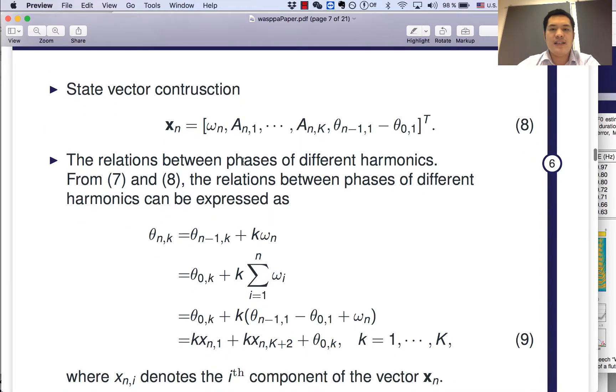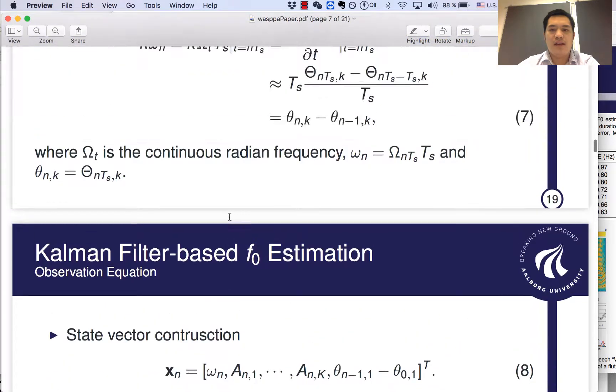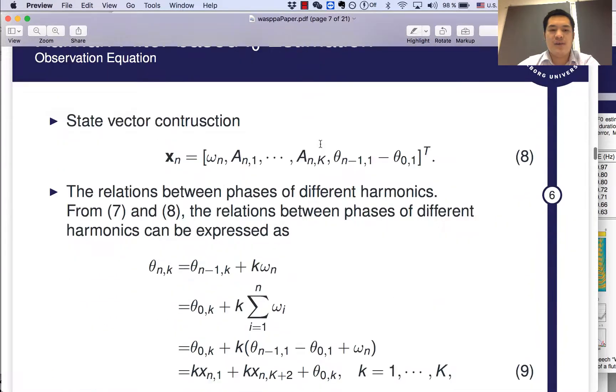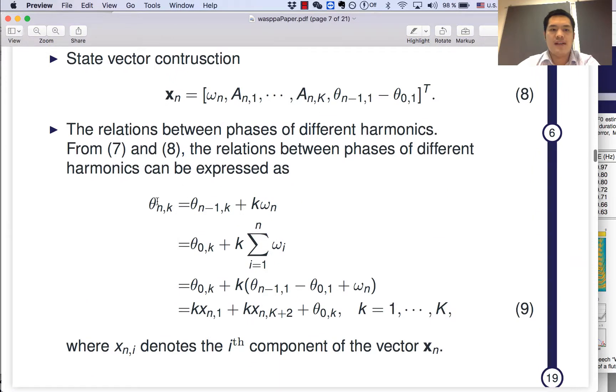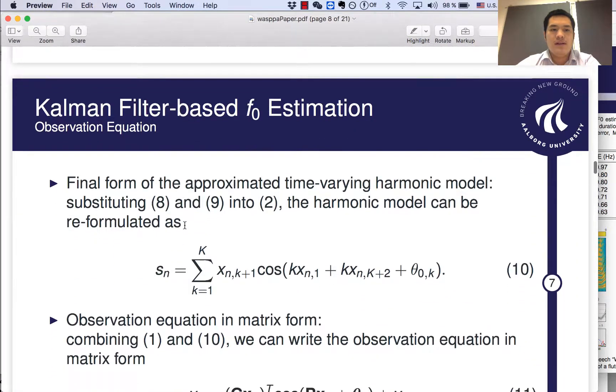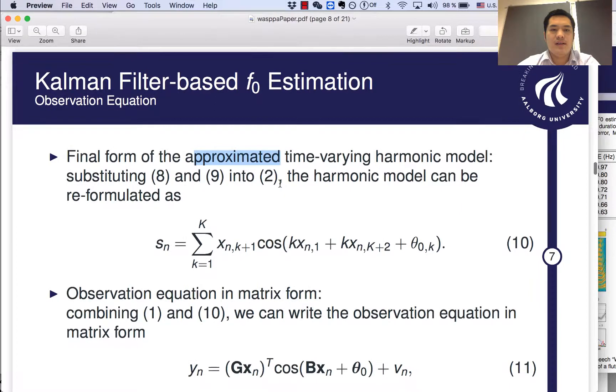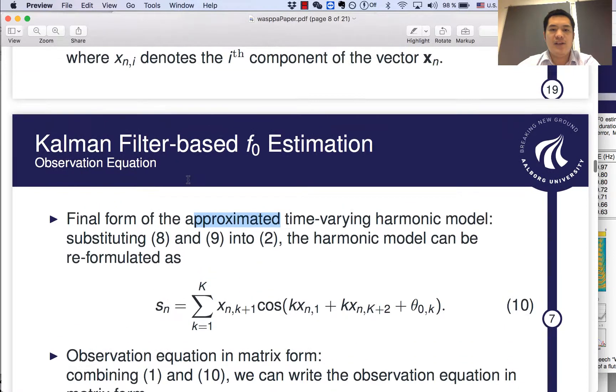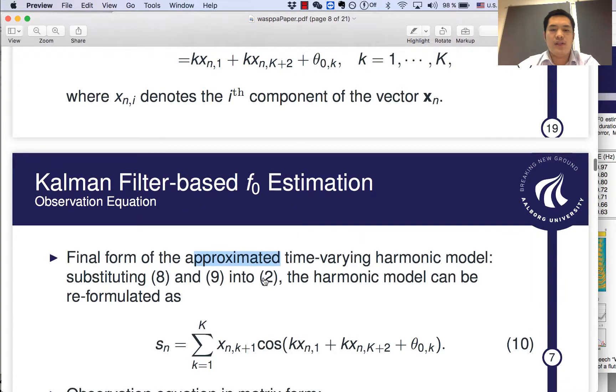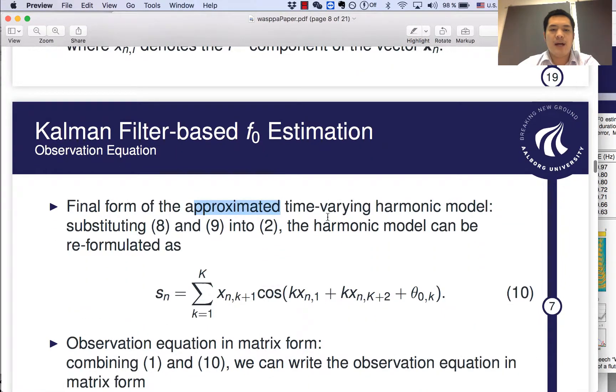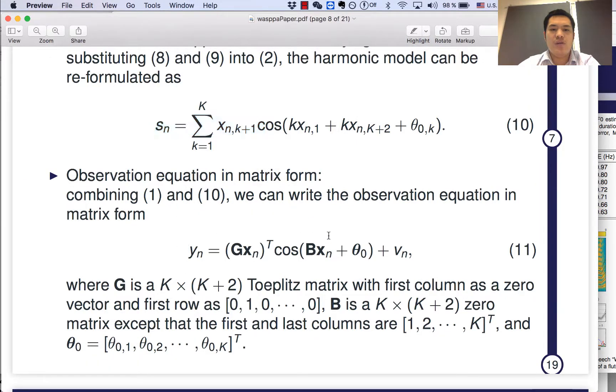Then the relation between the phase of different harmonics from equation seven and equation eight. We can express the relation between the phase of different harmonics as this one. Then the final form of approximate time-variant harmonic model, if we substitute eight and nine into equation two. Remember, the equation two is the harmonic model. Then the harmonic model can be reformulated as equation ten. If we write it into a matrix form, we will have equation eleven.